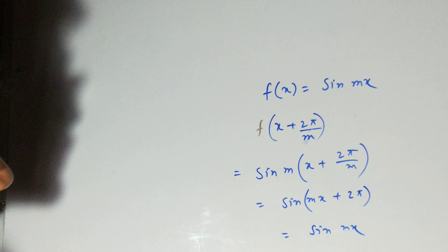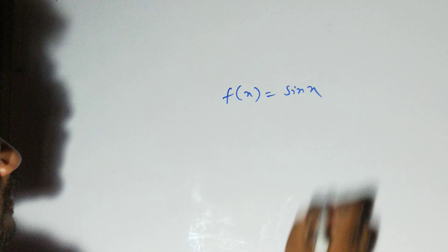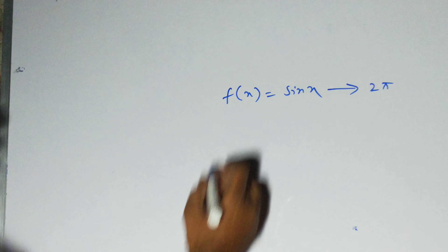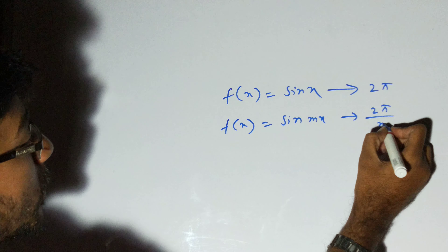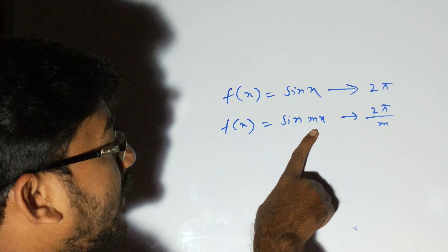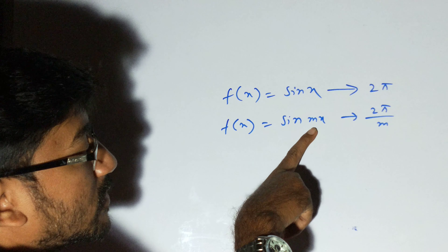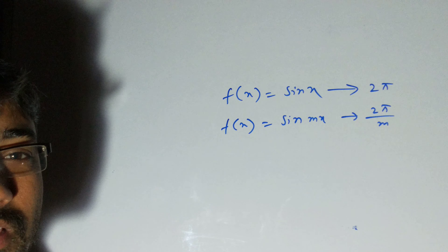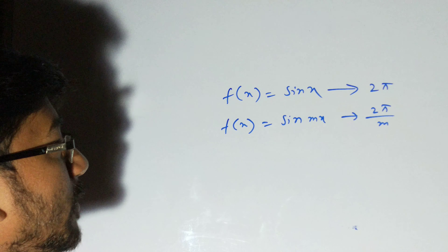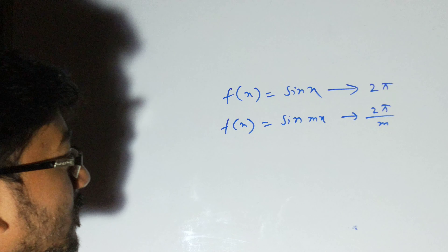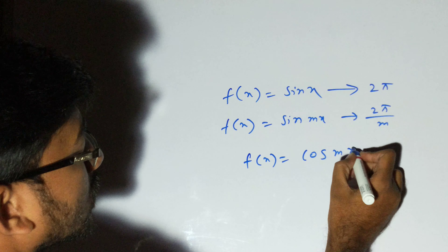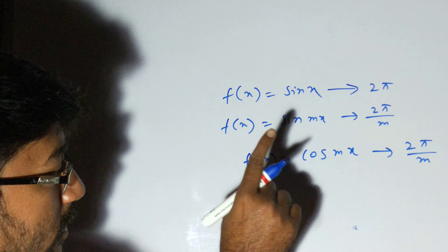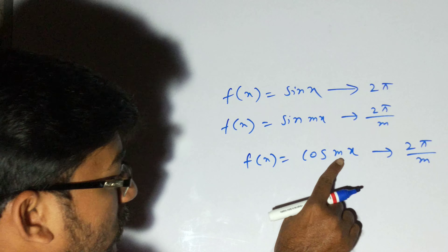To summarize: when f(x) = sin x, the period is 2π. When f(x) = sin(mx), the period is 2π/m. The constant multiplied with x divides the original period 2π. This is a simple trick to remember. Similarly, for f(x) = cos(mx), the period is also 2π/m, since the period of cos x is 2π.